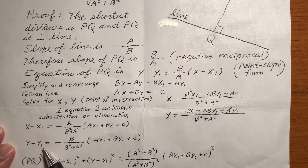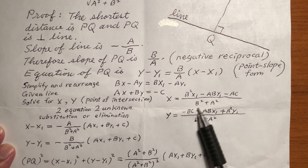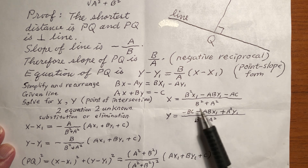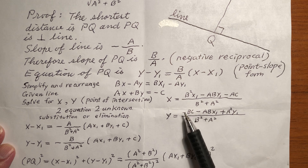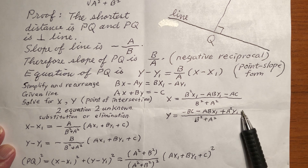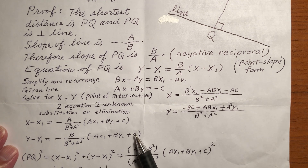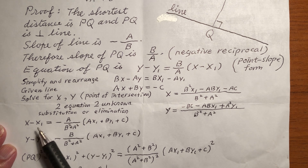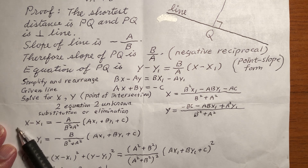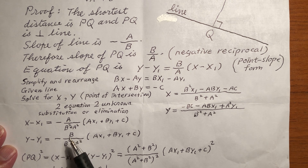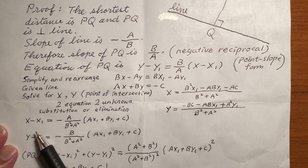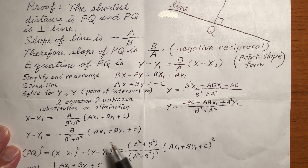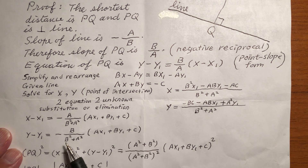Now compute y minus y1. You do common denominator and simplify the numerator to get this. It happens that you can factor out A from x minus x1, and you can factor out B from y minus y1. After factoring out A and B and simplifying, you get this result.